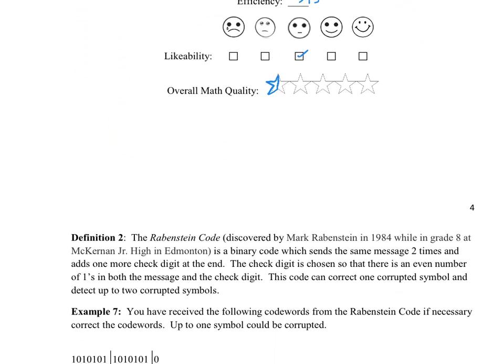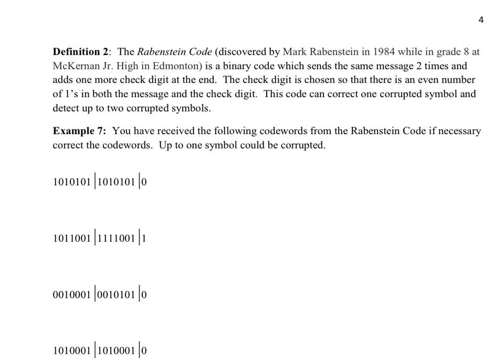Our next code is called the Ravenstein code. This code was due to Mark Ravenstein, who apparently was witnessing an outreach event at McKernan Junior High School in Edmonton. During the presentation, they were talking about the Hamming code and the triple repetition code, and they were trying to relate the two. Apparently Mark Ravenstein put up his hand and said, why would you ever want to repeat things three times when you could repeat things twice and have one check digit to check which one of the two is correct. From there, with a little bit of help, Mark Ravenstein published the Ravenstein code.